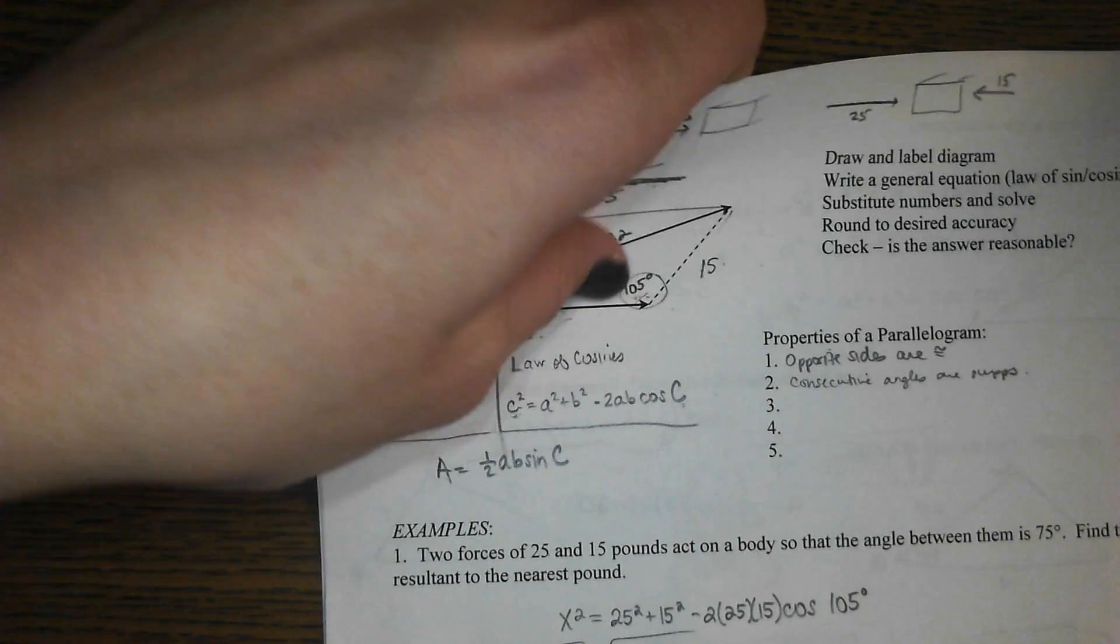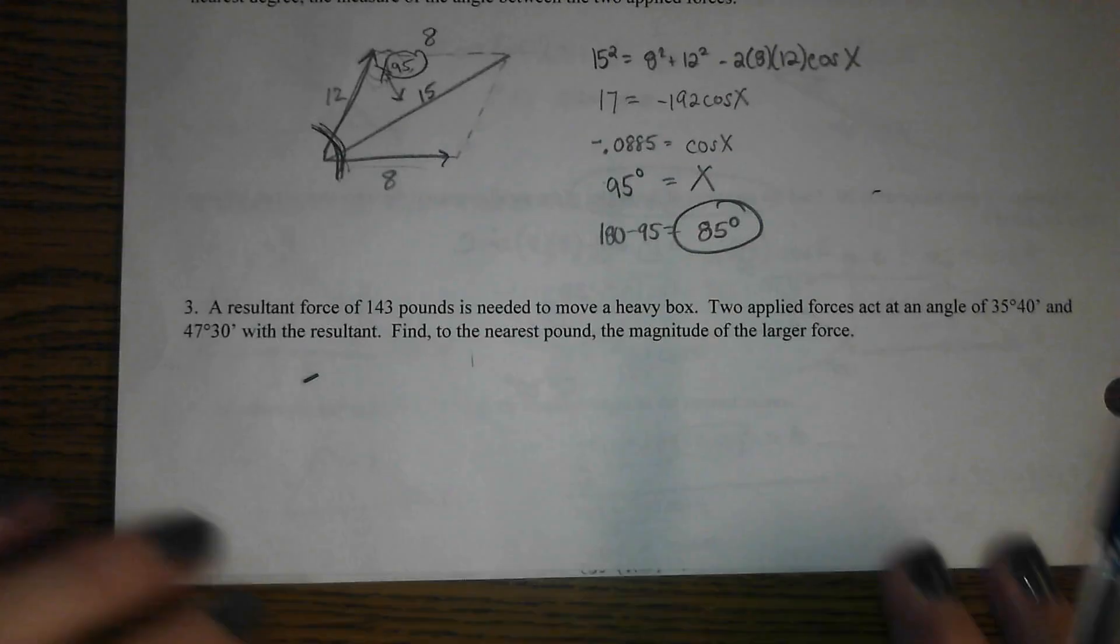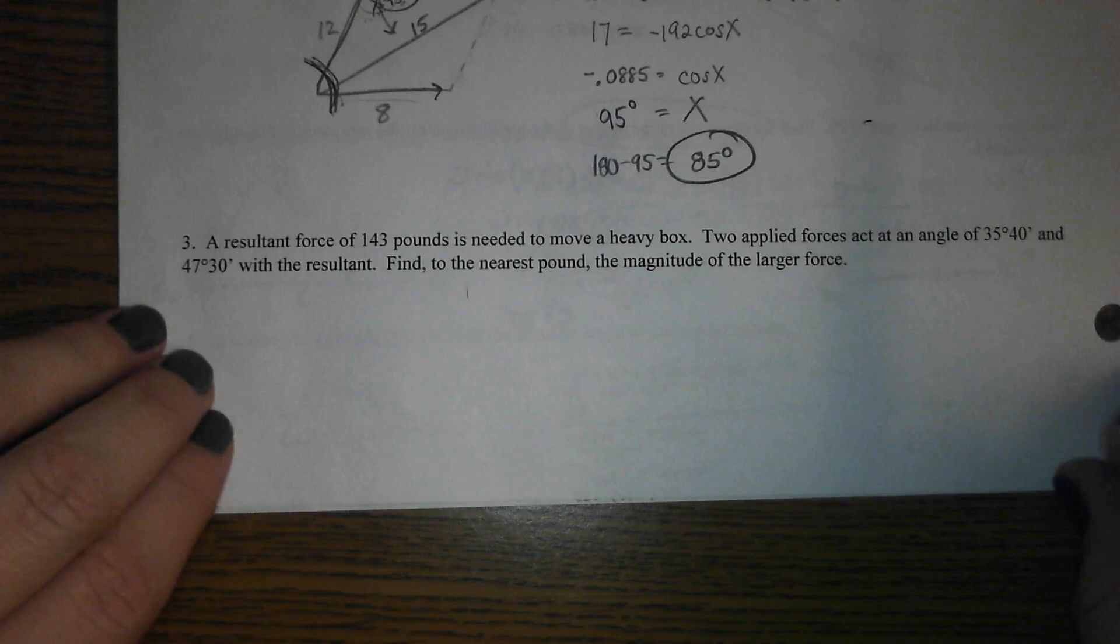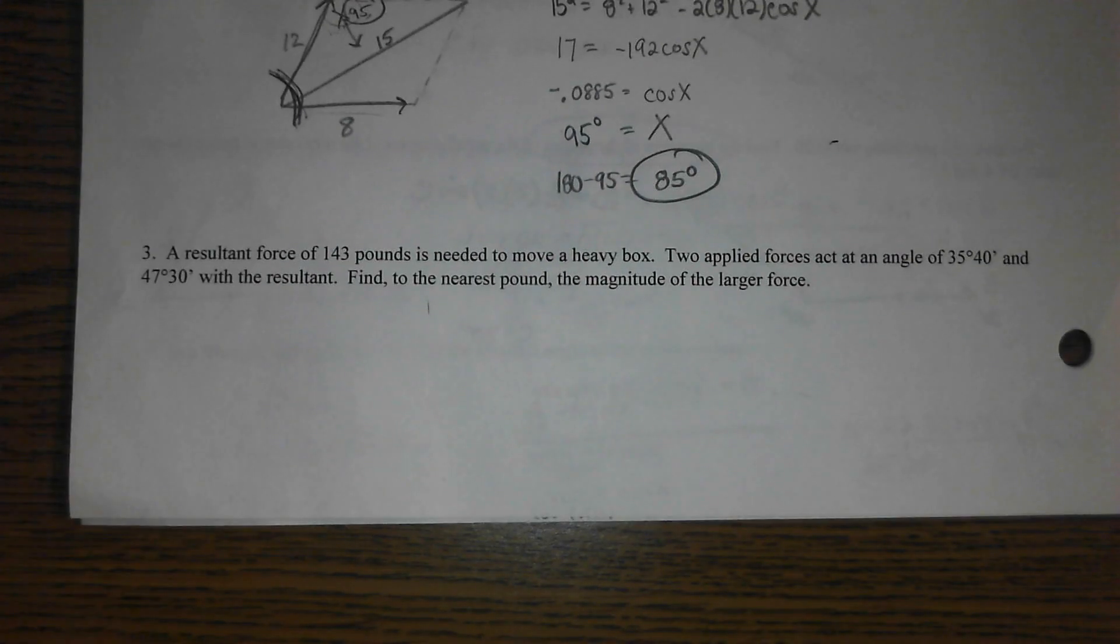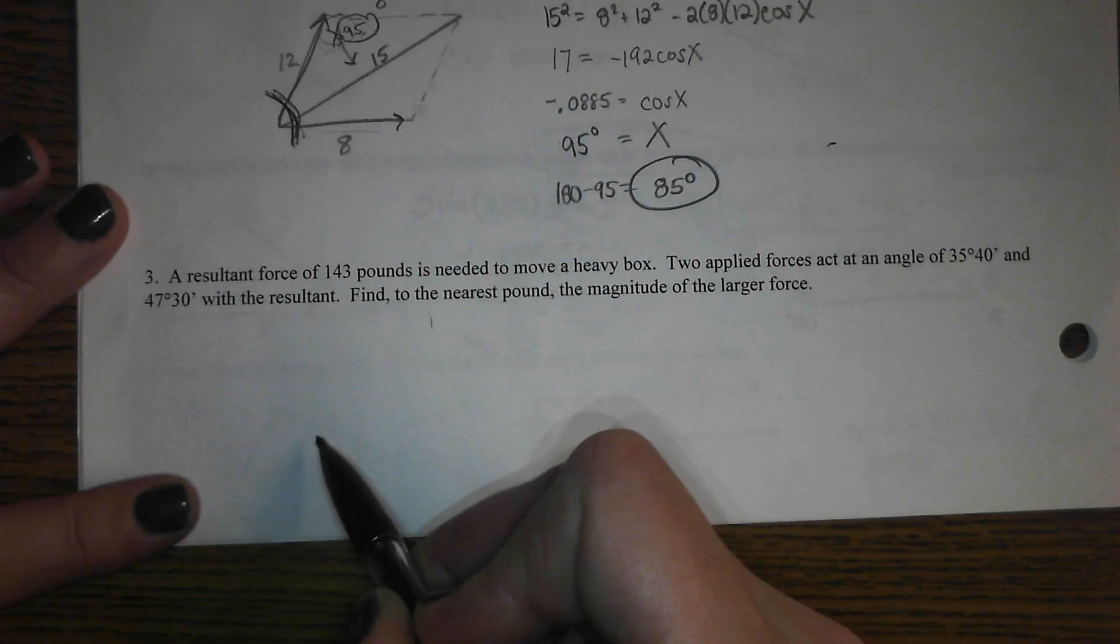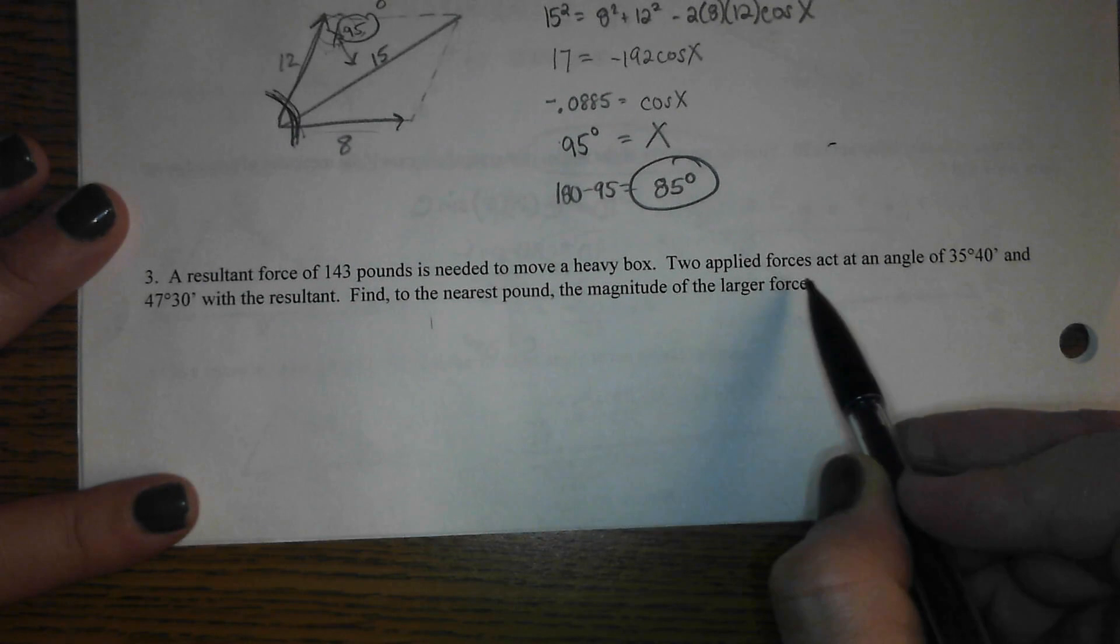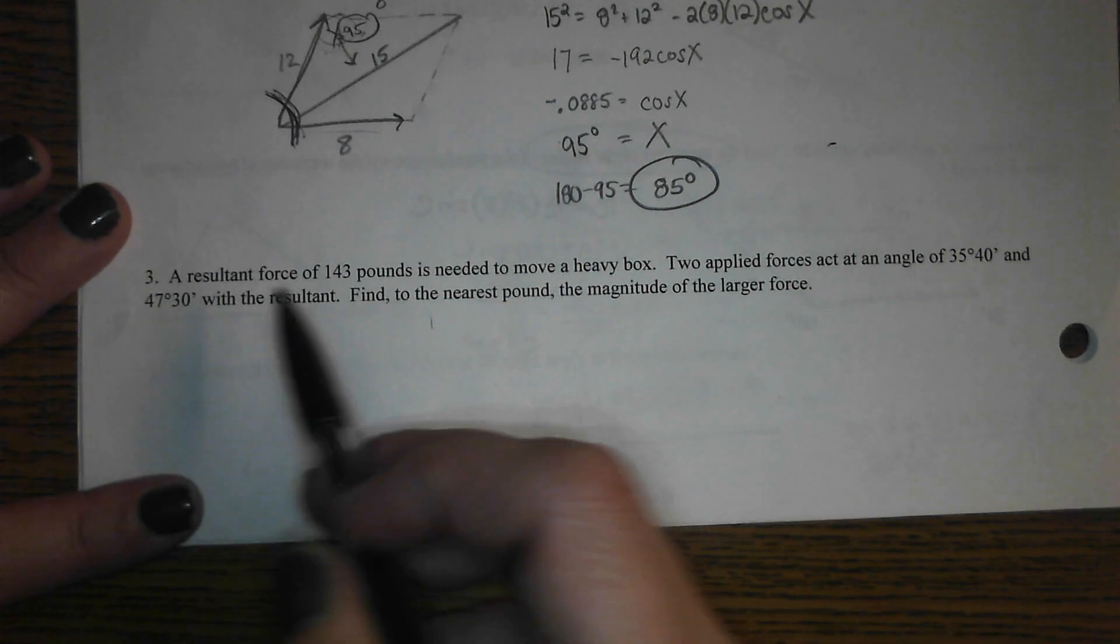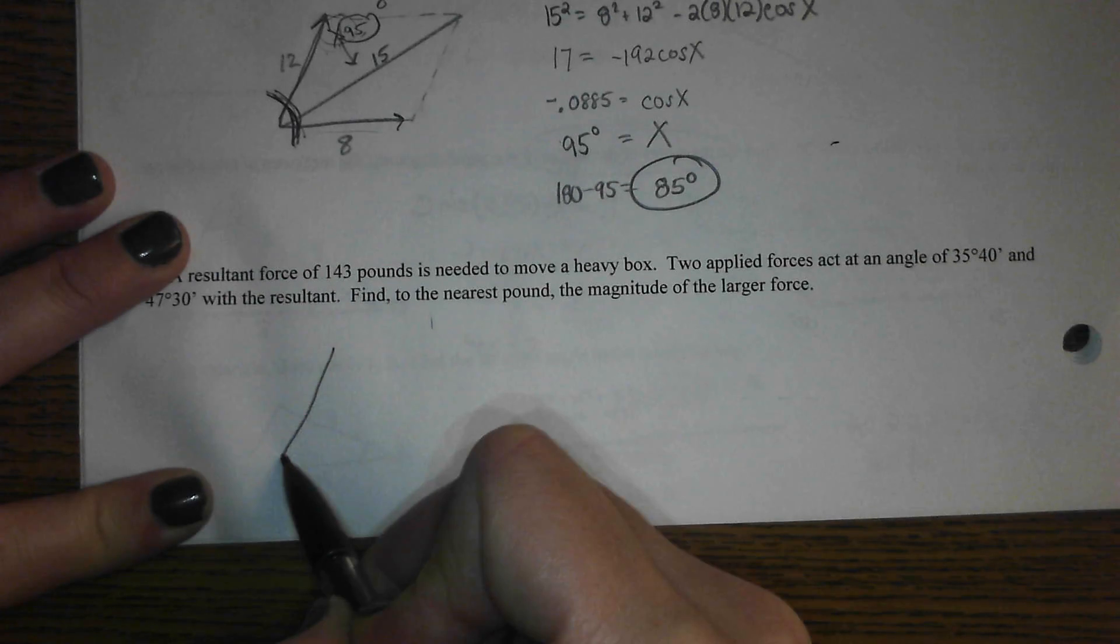All right, last one, let's hope Mrs. Frazier didn't throw something at me that's going to confuse me. A resultant force, oh I'm sure it's not crazy different, but a resultant force of 143 is needed to move a heavy box. Two applied forces act at an angle of 35 degrees 40 and 47 degrees 30.